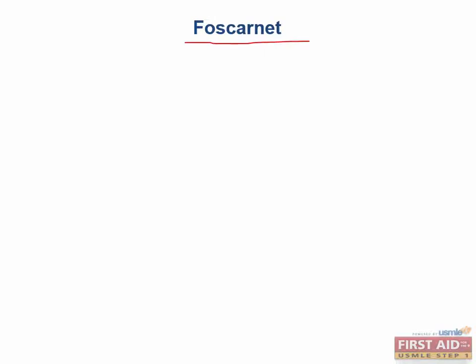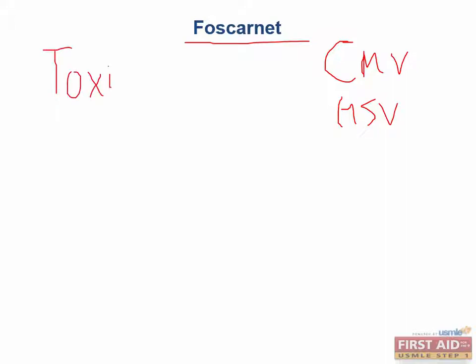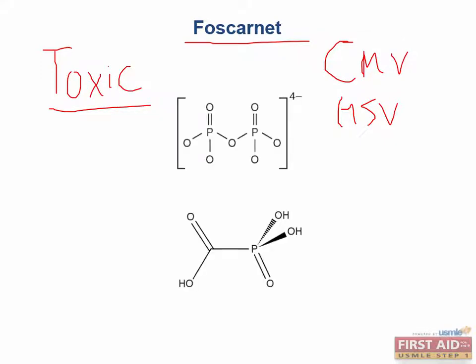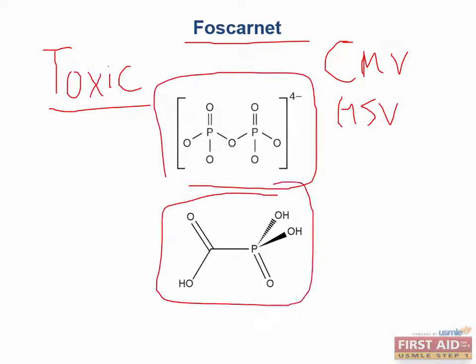Foscarnet is another drug used to treat CMV when Ganciclovir fails, as well as HSV when acyclovir fails. This drug is highly toxic and is only used when acyclovir or Ganciclovir therapy fails. Here is an image of pyrophosphate and Foscarnet — you can notice that they are similar-looking molecules.